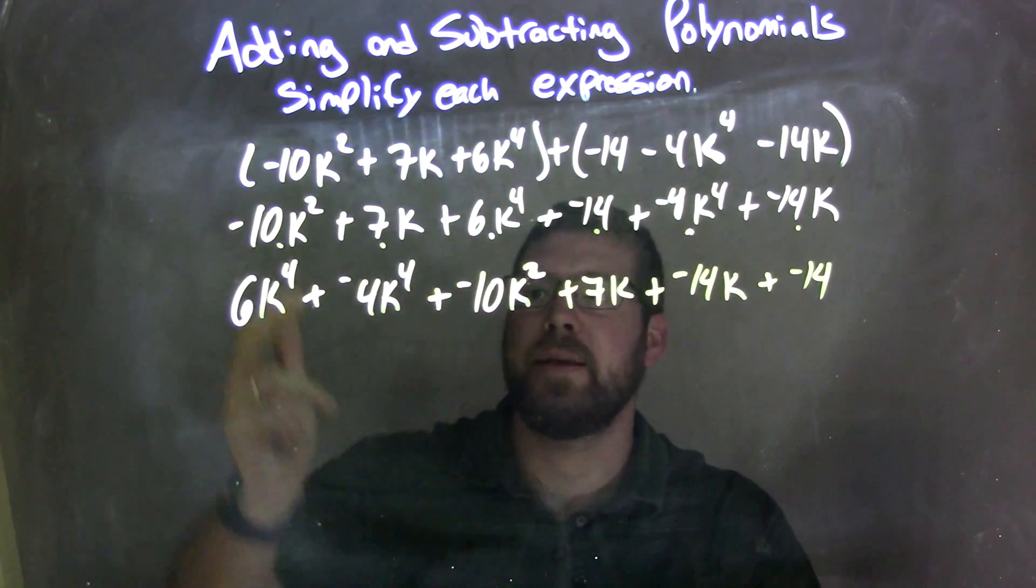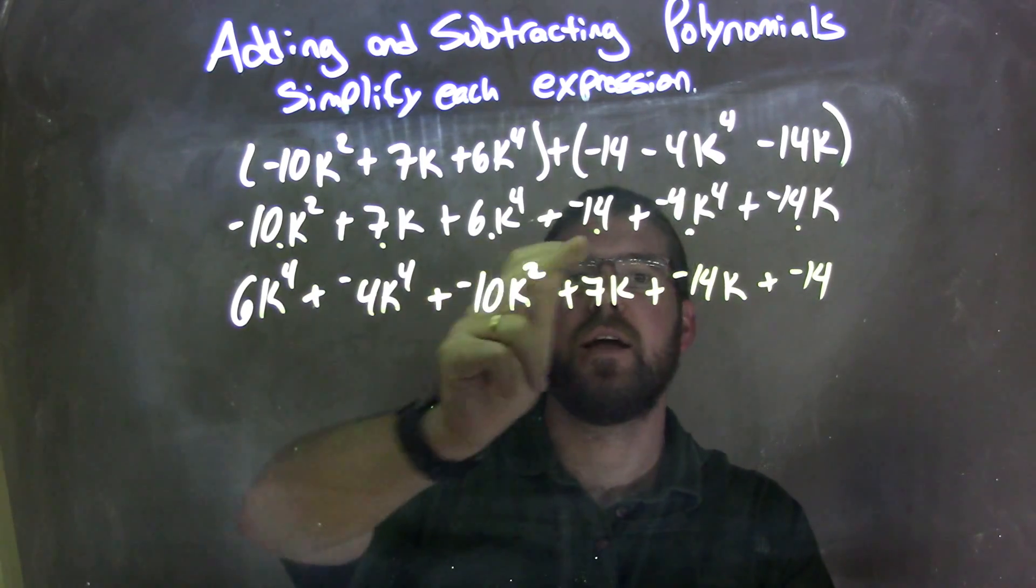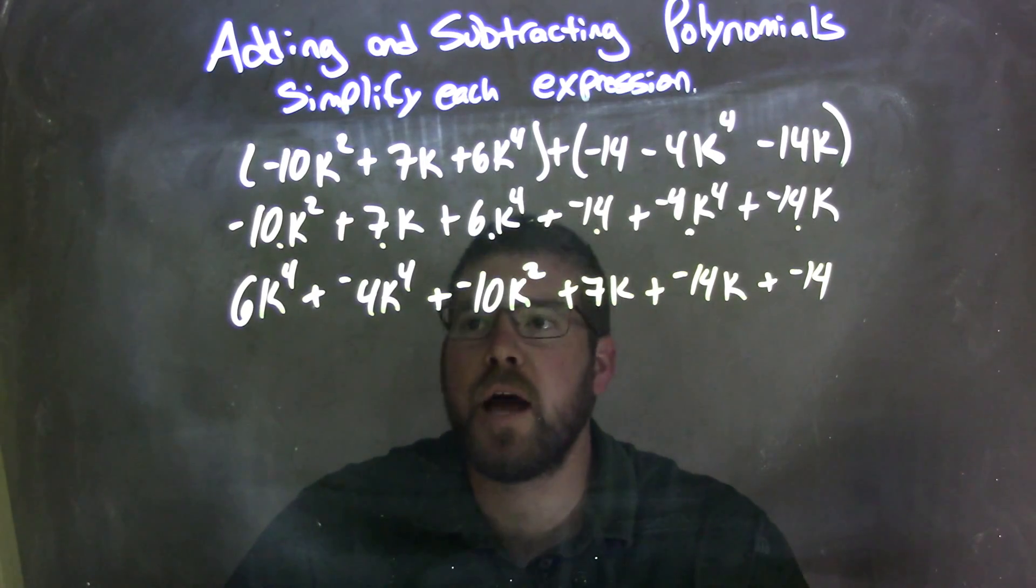There we go. Let's double check we brought everything down. Negative k squared, 7k right there, 6k to the fourth, negative 14 right there, negative 4k to the fourth, and negative 14k. So now we have that.